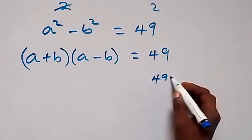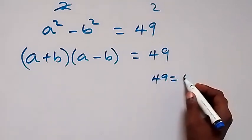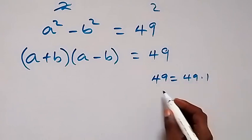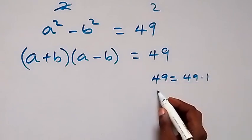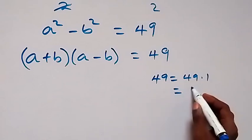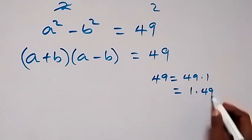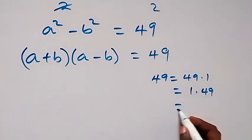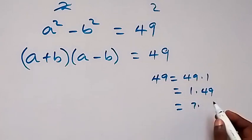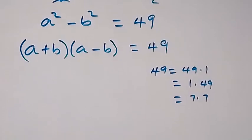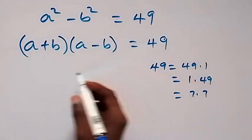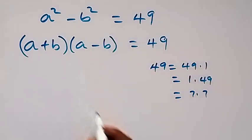We break 49 down into products of its factors: 49 can be written as 49 times 1, or as 1 times 49, or as 7 times 7.